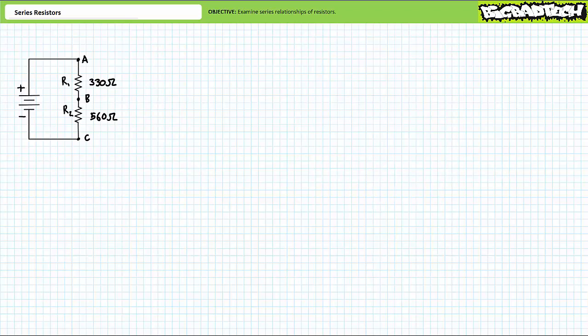A circuit is a complete path or a closed loop. The loop could be a single circular, rectangular, or any other shape forming a complete loop, or composed of many different pathways, at least one of which allows passage from one terminal of a voltage source to the other. Without at least a single closed loop, there is no circuit and no way conventional current can flow from the positive terminal to the negative terminal. Perhaps the simplest configuration of multiple resistors is a series or inline configuration.